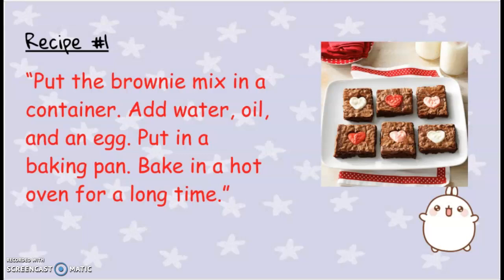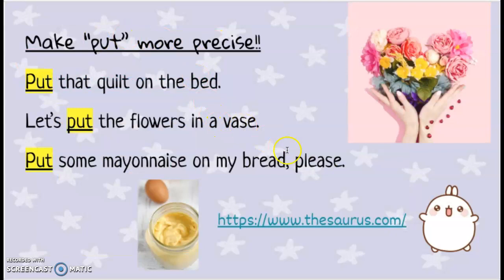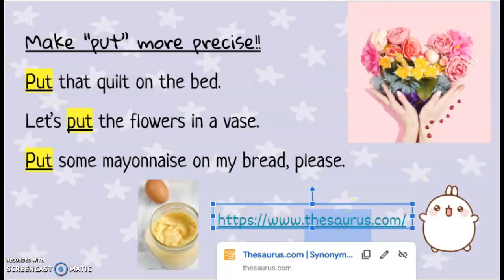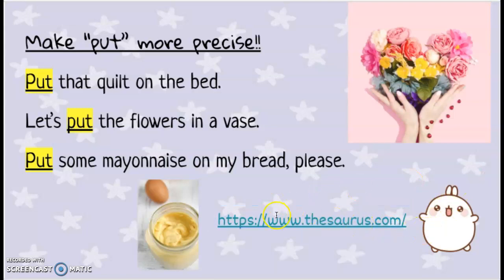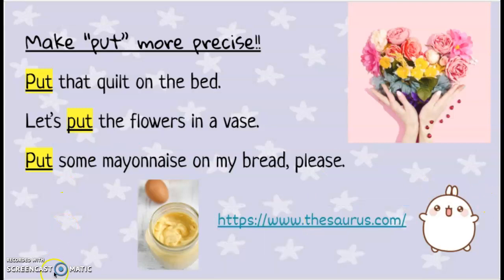There are two things to keep in mind when using precise words. The first one is using the thesaurus. You're going to be using the thesaurus to find precise words. For example, look at these sentence examples — it's redundant to use the word "put" so many times. That's why thesauruses are so useful: they give us synonyms, words with similar meanings. Go to thesaurus.com — I'll put the link here — and try to look for words to replace these "puts".